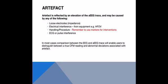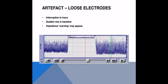This trace shows high impedance: the trace is interrupted and the baseline has risen up. In this case we need to review our electrodes and possibly reposition, re-secure, or replace them.